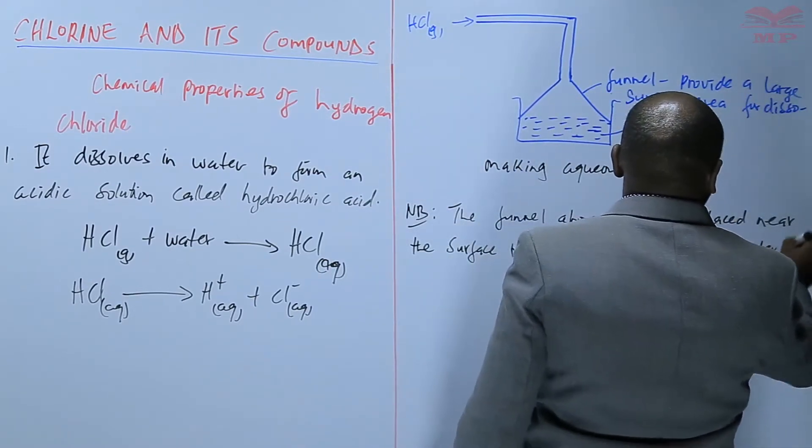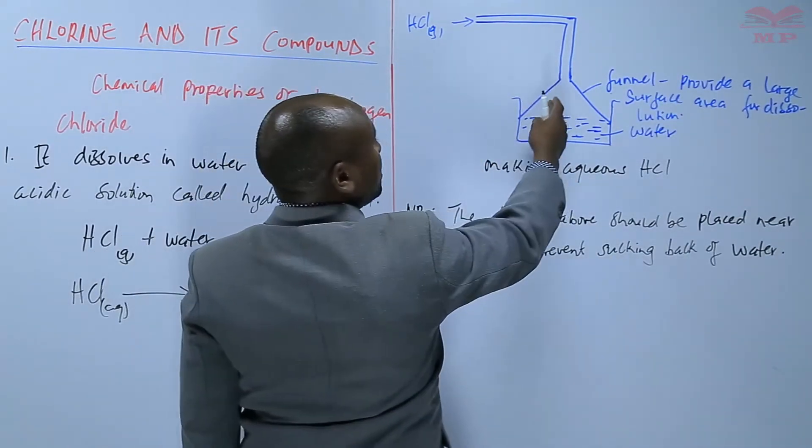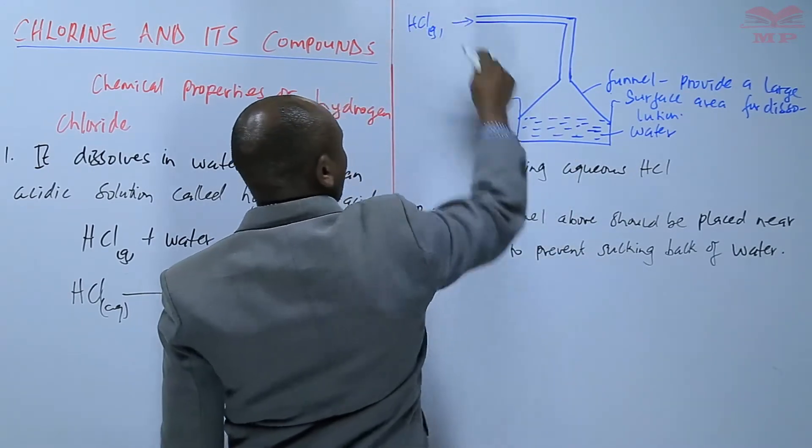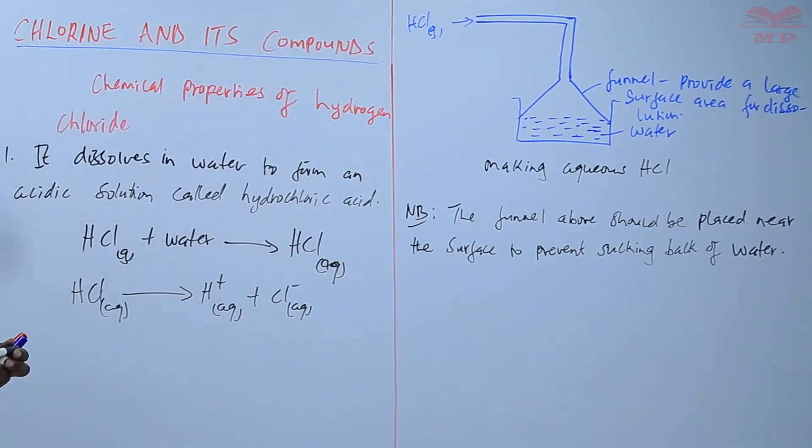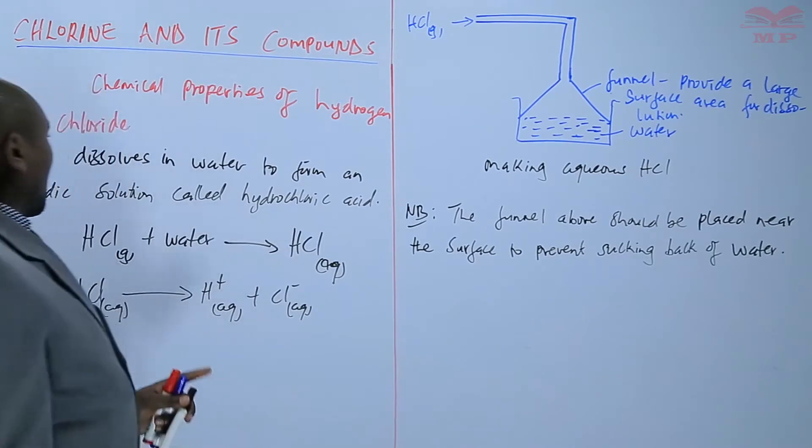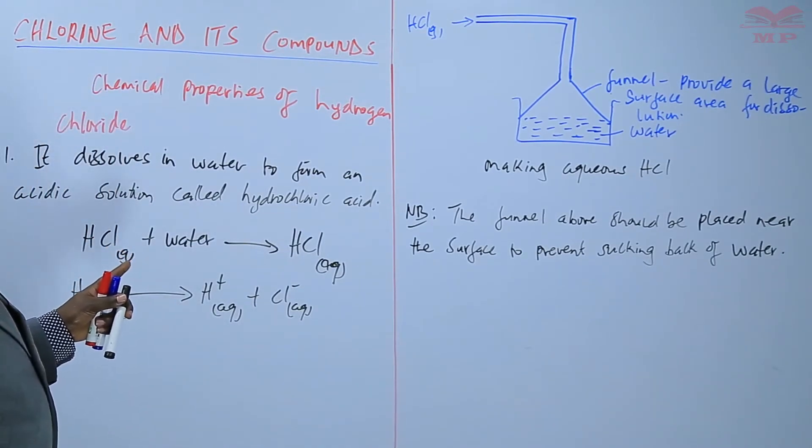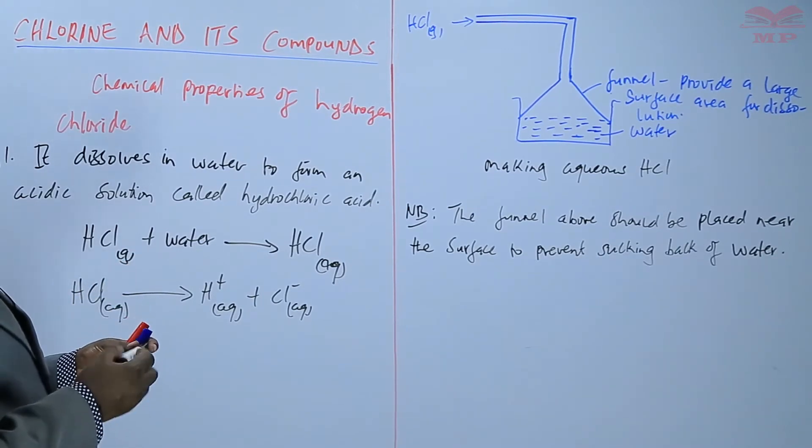The gas is highly soluble in water and all of it can dissolve creating a vacuum that sucks back the water. So it should just be placed on the surface of the water. So basically that is how the hydrogen chloride dissolves in water to form an acidic solution called hydrochloric acid.